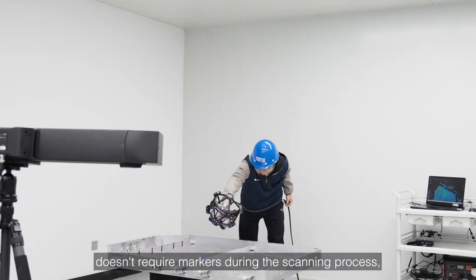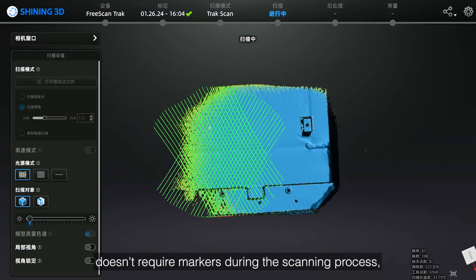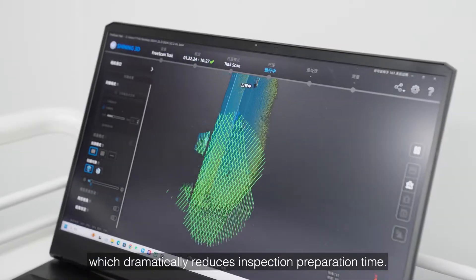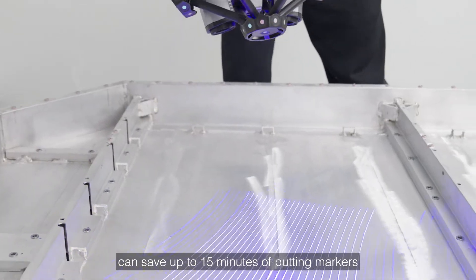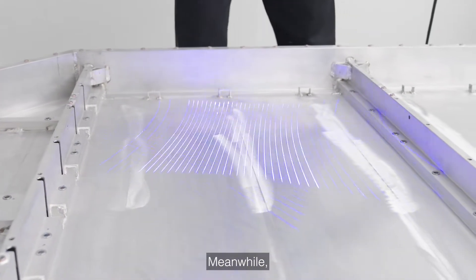FreeScan Track Pro 2 doesn't require markers during the scanning process, which dramatically reduces inspection preparation time. A battery tray can save up to 15 minutes of putting markers.